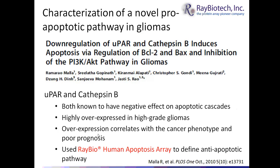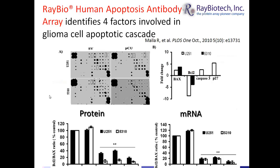Overexpression of UPAR and cathepsin V correlates with cancer phenotype and poor prognosis. Josti Rauh's group utilized the Ray Biotech Human Apoptosis Array to define a novel anti-apoptotic pathway involving these proteins. Using siRNA-mediated transient knockdown of both UPAR and cathepsin V, with a scrambled vector (SV) as control and a PCU vector coding for the siRNA, they studied the two high-grade glioma cell lines U251 and 5310 with the Ray Biotech Human Apoptosis antibody array.